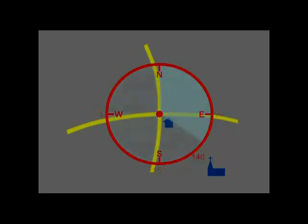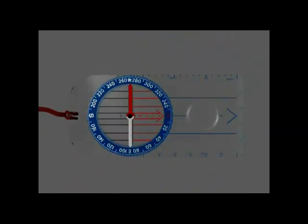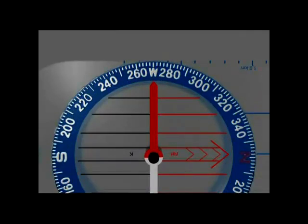Here the bearing from the crossroads to the church is 140 degrees. There are many kinds of compass, but the most useful for outdoor activities is one like this. It has a rotating compass dial on top of a transparent base plate.